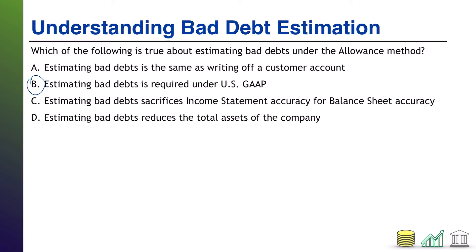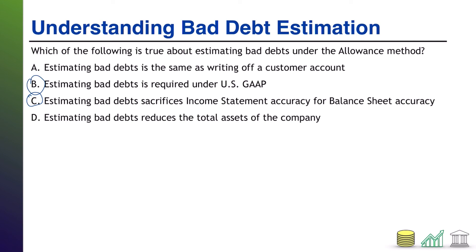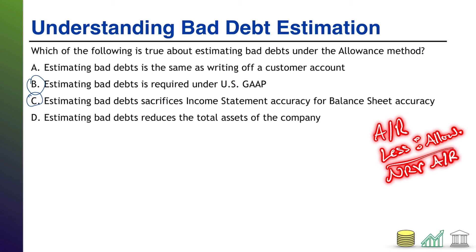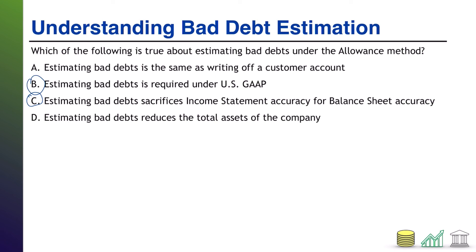How about C: estimating bad debt sacrifices income statement accuracy for balance sheet accuracy. That is also true. When you think about the income statement, it's supposed to show the revenues earned and the costs incurred. But when you estimate a bad debt, the actual write-off hasn't happened yet — the cost hasn't truly been incurred because you don't actually know if it'll come true. So you lose some income statement accuracy by estimating bad debts. However, by estimating bad debts you are able to create an allowance account on your balance sheet, so your balance sheet shows AR less the allowance for doubtful accounts equals the net realizable value — what you think you're going to collect. That's much more informative from a balance sheet perspective than simply saying here's what customers owe us.